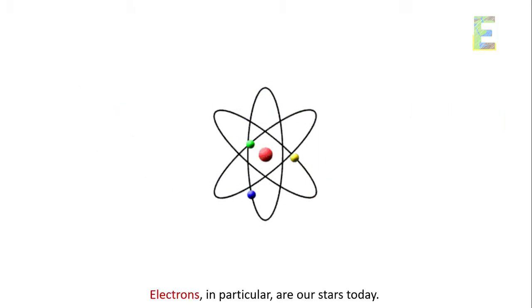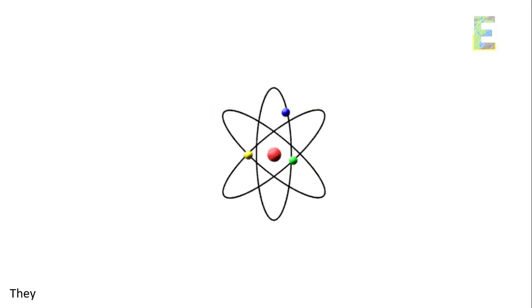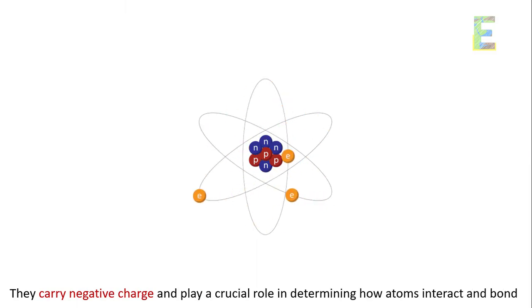The role of electrons. Electrons, in particular, are our stars today. They carry negative charge and play a crucial role in determining how atoms interact and bond.